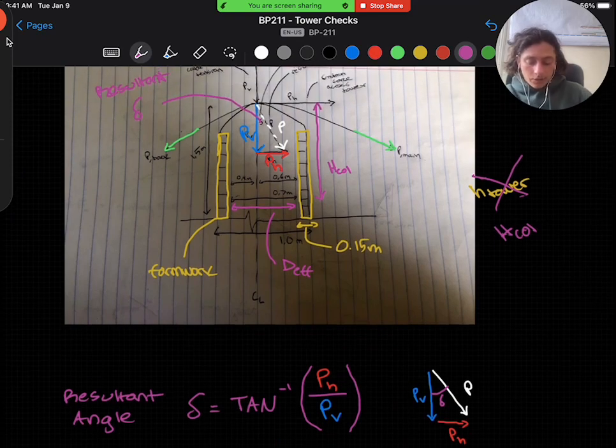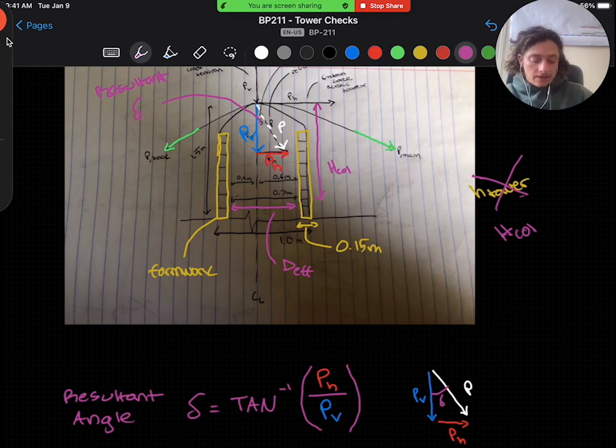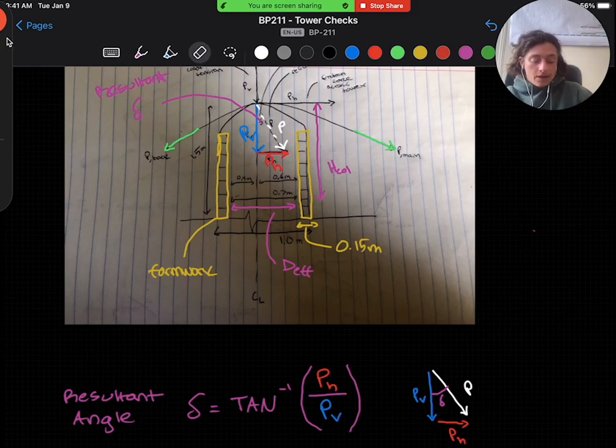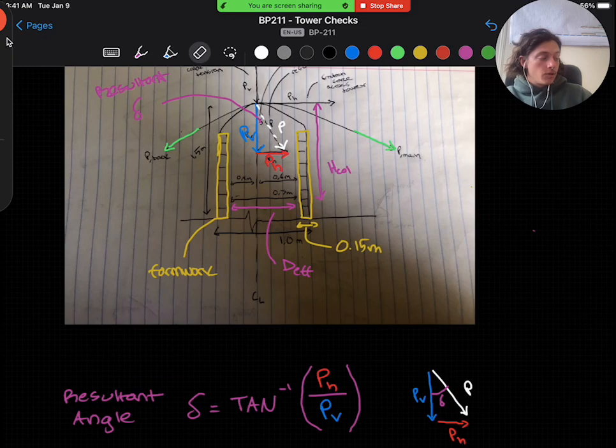So I've drawn out the equation for you here. Our delta is arctan of pH over PV. And I've shown here just a small diagram, or little thumbnail diagram, if you will, that shows the vertical and horizontal force. And now that white term P is our resultant, and it's going to form an angle delta.